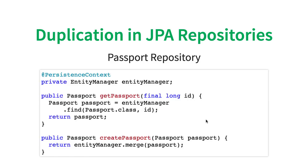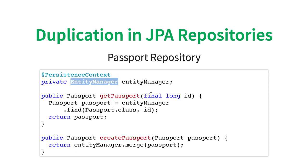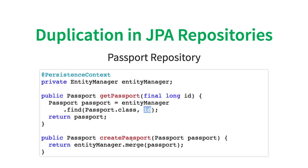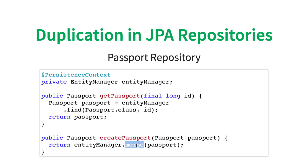Let's imagine you are developing an application using JPA. When you write applications using JPA, in your data layer, in your data objects, what you would be doing is using the entity manager. We would have the entity manager and use it to create entities. Over here, we are trying to use the entity manager and find a passport with a specific ID. Here, we are trying to create a passport — we would call the merge method.